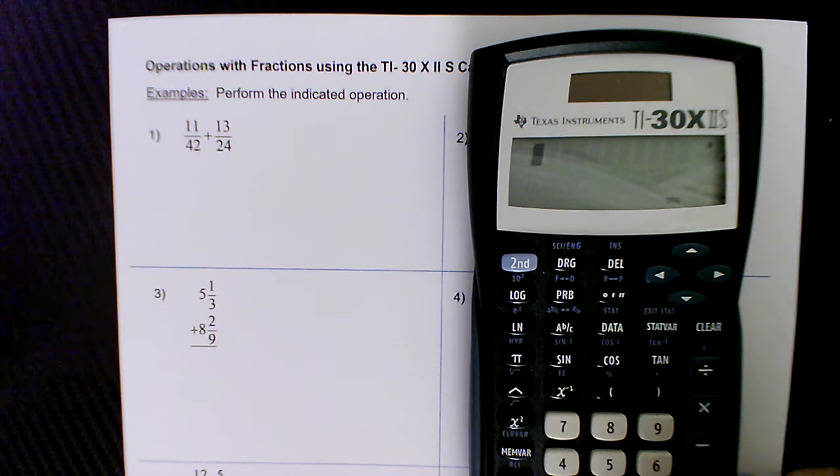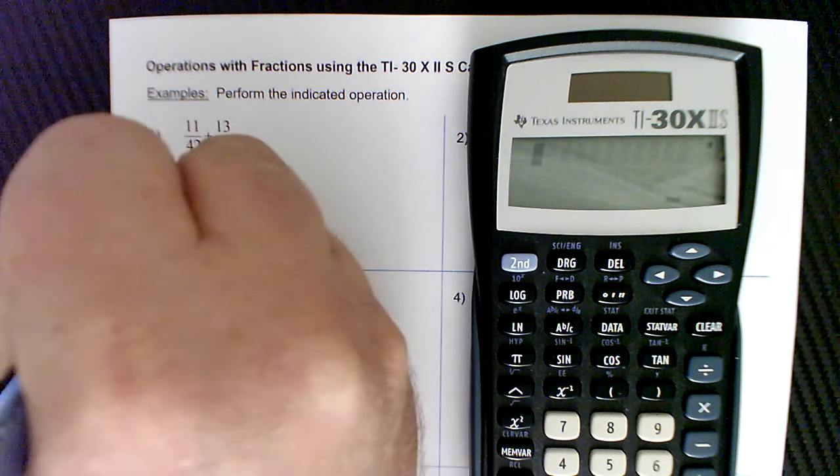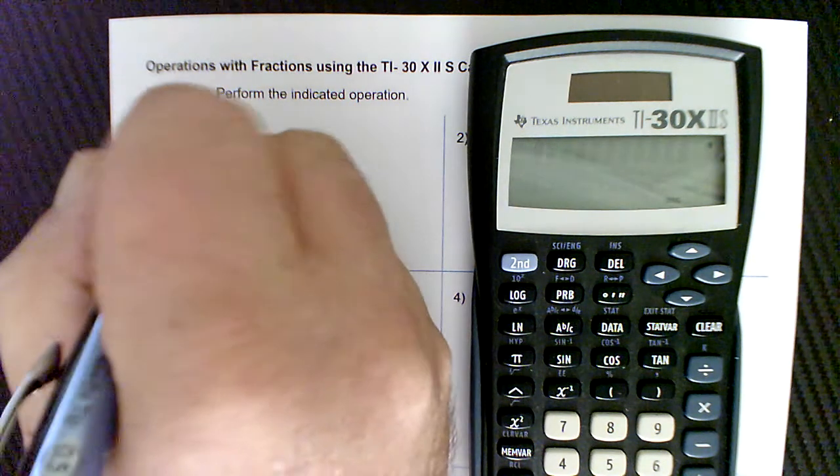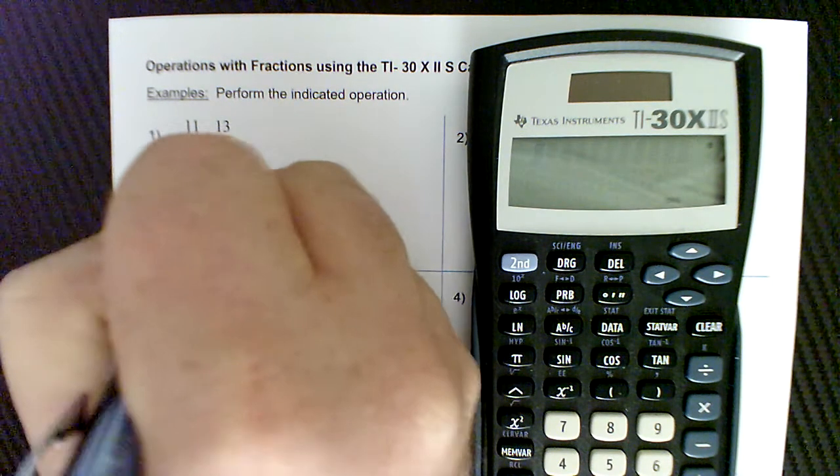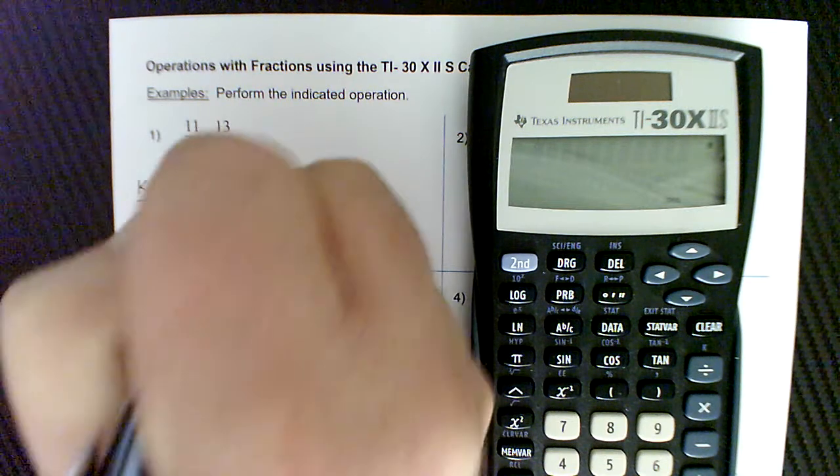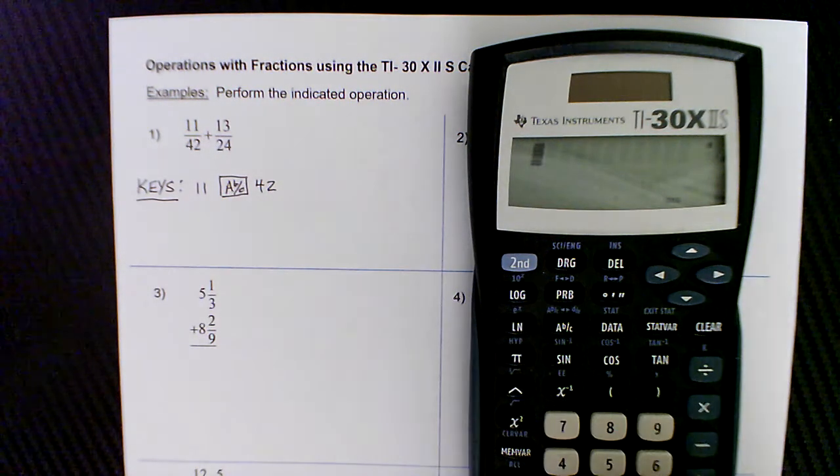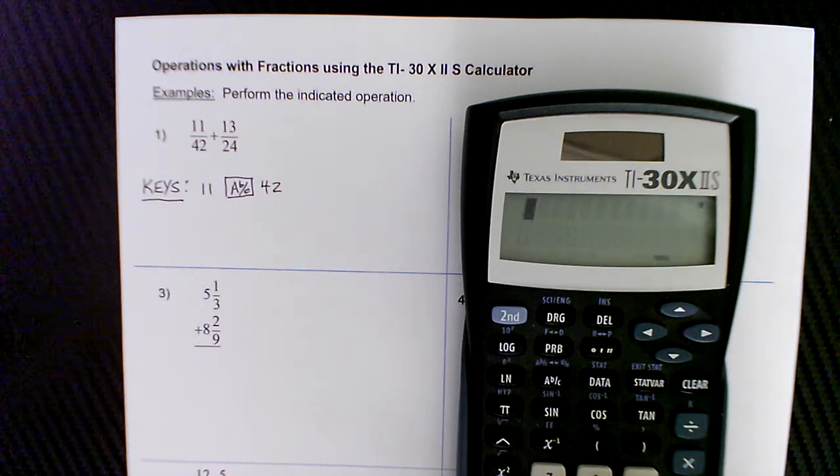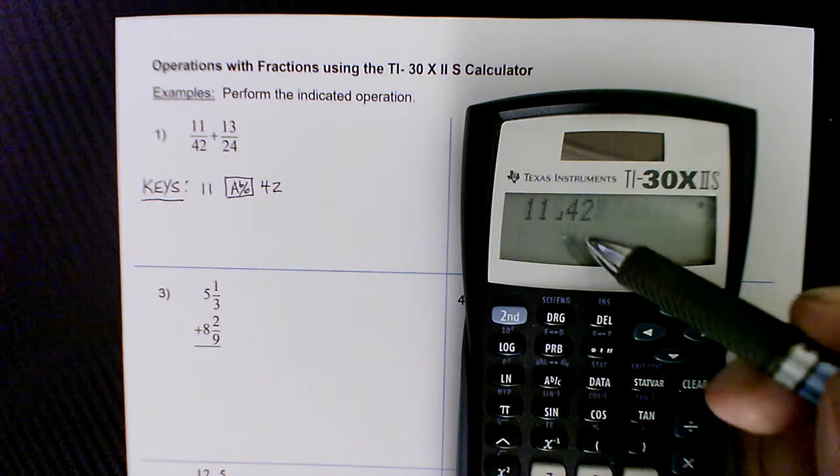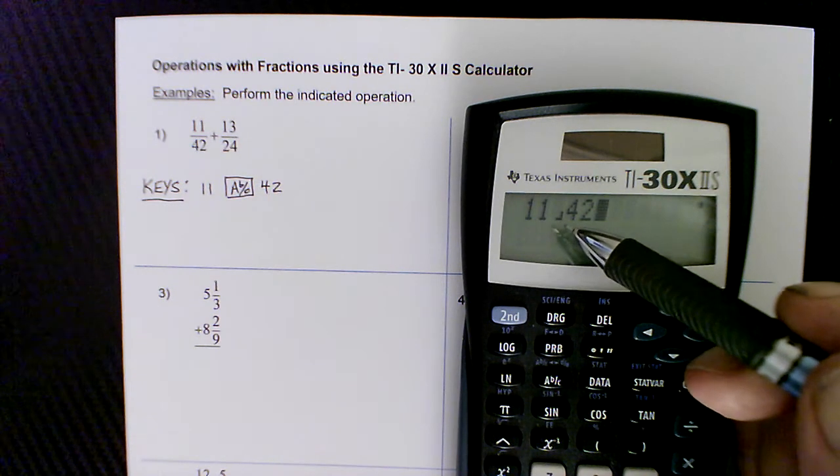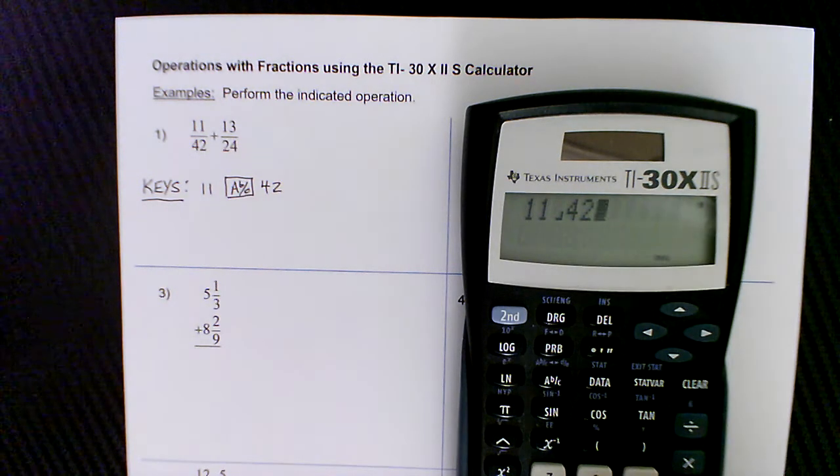And it's pretty straightforward. We'll look at these problems and here I'm going to write out the keystrokes for a couple of them, but it'll be pretty obvious. For example, what we're going to do is we're going to type in 11 and then hit the fraction key. I'll put that in a little box here, A with a B over C and then type in 42. And let's see what that looks like on the calculator. So if I type in 11, hit the fraction key and then 42, you can see there's this little backwards upside down L that indicates the fraction bar. So that was 11 over 42. And then we're just simply going to add, so plus.